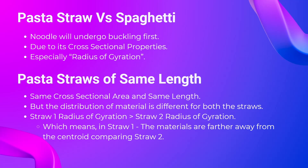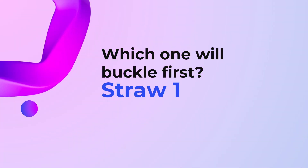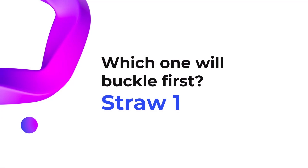What is the evident proof that radius of gyration is responsible for this buckling behavior? Let's consider two pasta straws of the same length and the same cross-sectional area, but with different material distribution. For one straw, we arrange the material as close as possible to the centroid. For the other straw, we place the material as far away from the centroid as possible. Let's say straw 1 has a higher radius of gyration than straw 2. In this case, which one will buckle first? Obviously straw 1, because it has a greater radius of gyration than straw 2.